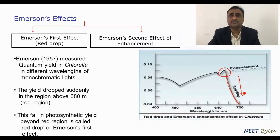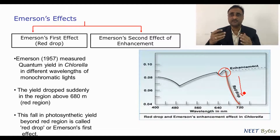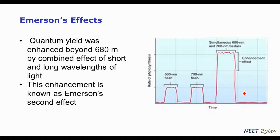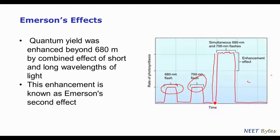To understand why this drop actually occurs, he did another experiment called the Emerson enhancement effect. He gave two wavelengths of light simultaneously — one of shorter wavelength and another of longer wavelength. When the two superimposed beams of light were given, it was observed that the photosynthetic yield was much greater compared to when both lights were used individually. For instance, the yield for 680 nm and 700 nm individually, even when summed up, could not match what was obtained when used simultaneously. This enhancement in photosynthetic yield is referred to as the Emerson enhancement effect.